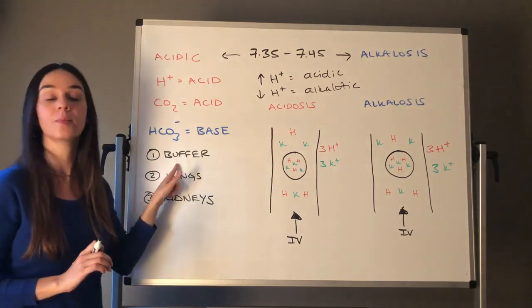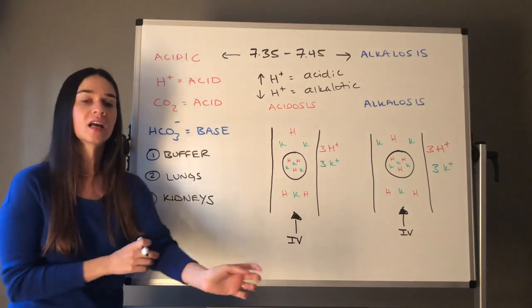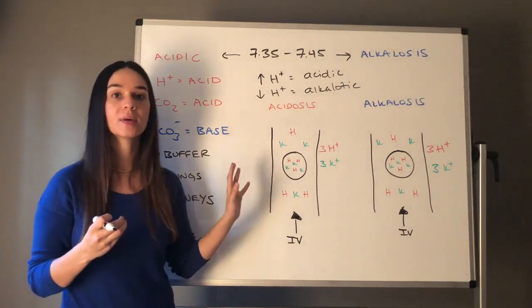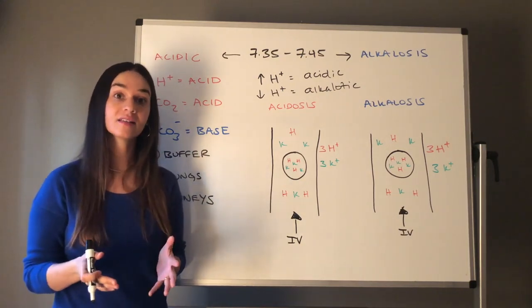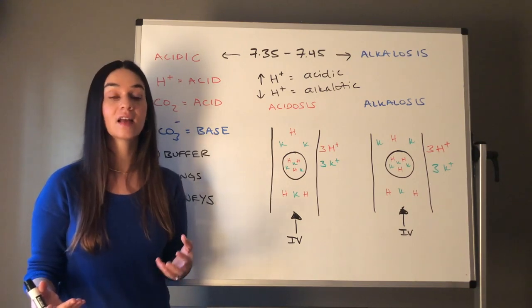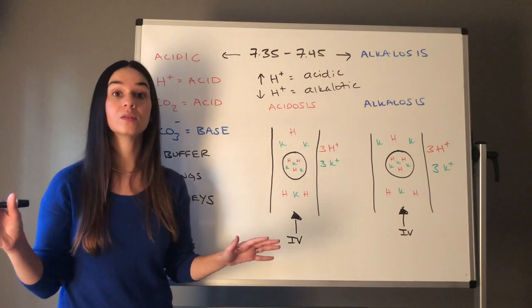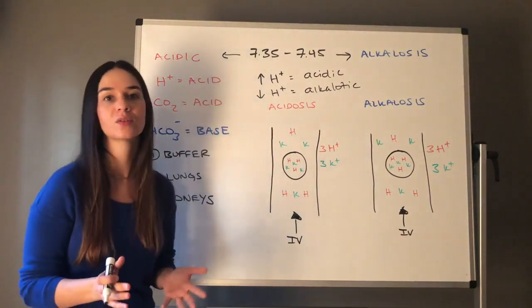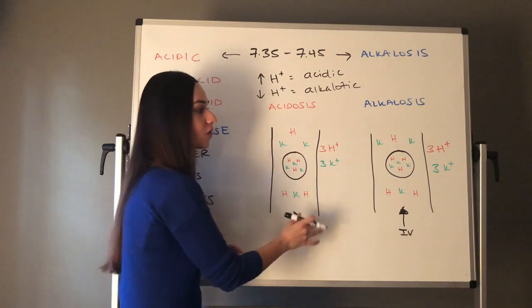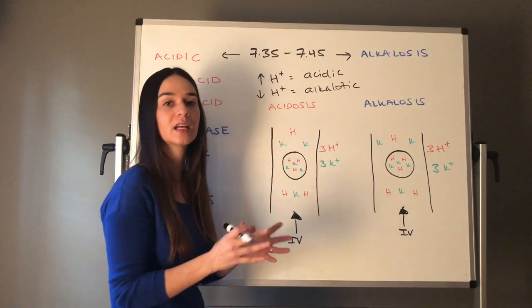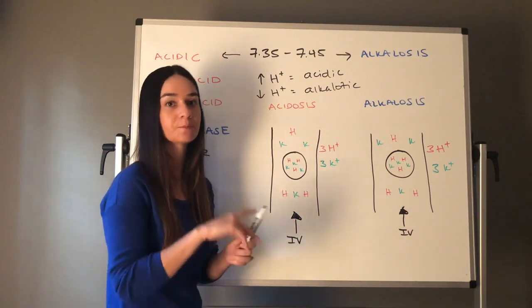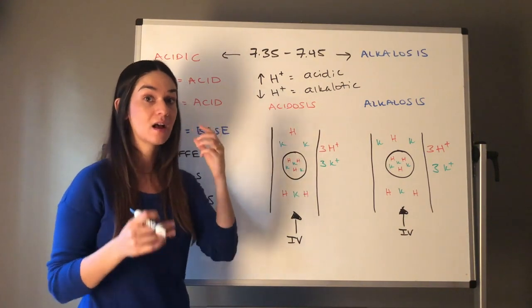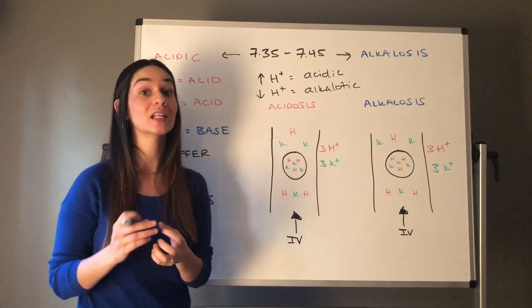The first thing to kick in is our buffer system. In my nursing brain, I really want to know how potassium is influenced because potassium is shifted in acid-base imbalances. If potassium is high or low, it can lead to life-threatening problems such as cardiac dysrhythmias. Normal potassium levels are 3.5 to 5. Let's talk about how potassium looks in an acidic state and an alkalotic state.